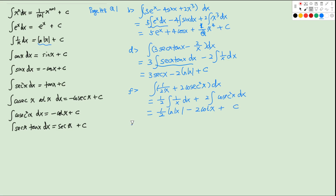For question H we have the integral of eˣ + sinx + cosx dx. If you are familiar with the formulas, you don't need to separate this into several terms — you can write this out directly. For eˣ we get eˣ, for sinx we get negative cosx, and for cosx we get sinx, so the answer is eˣ − cosx + sinx + C.